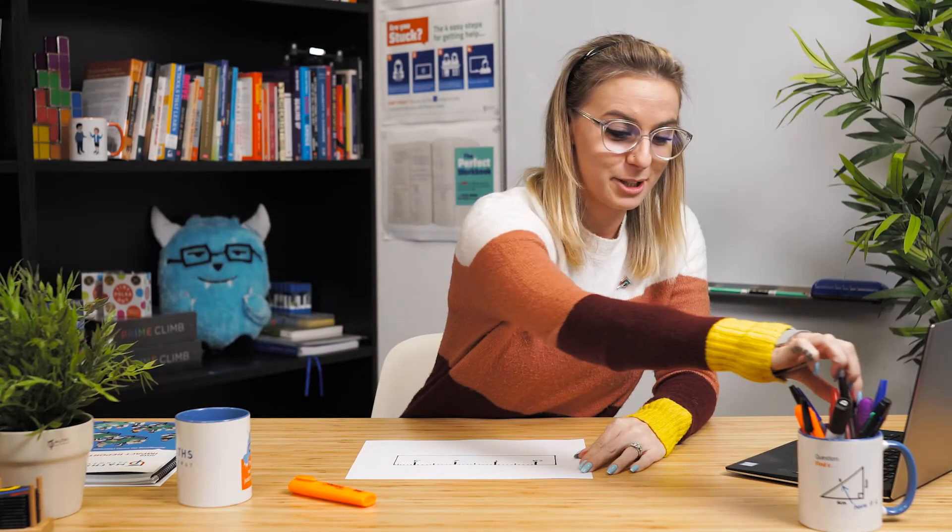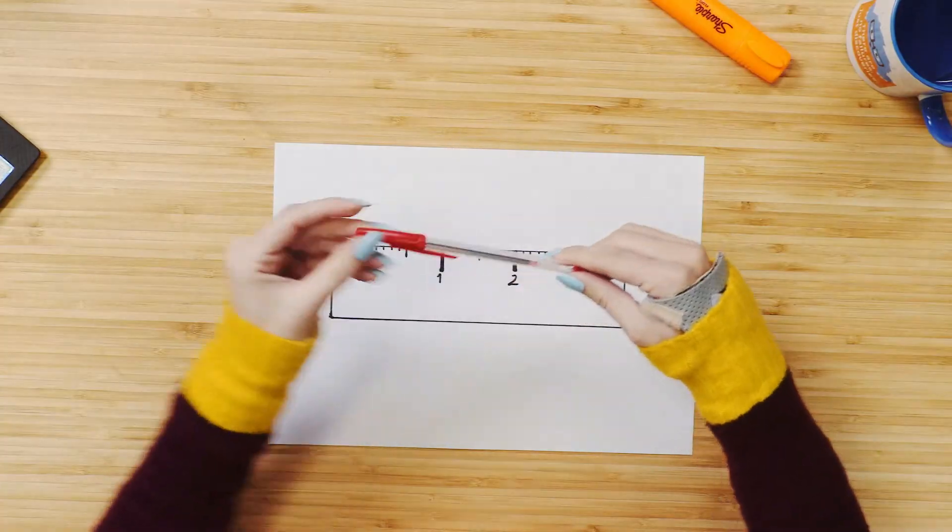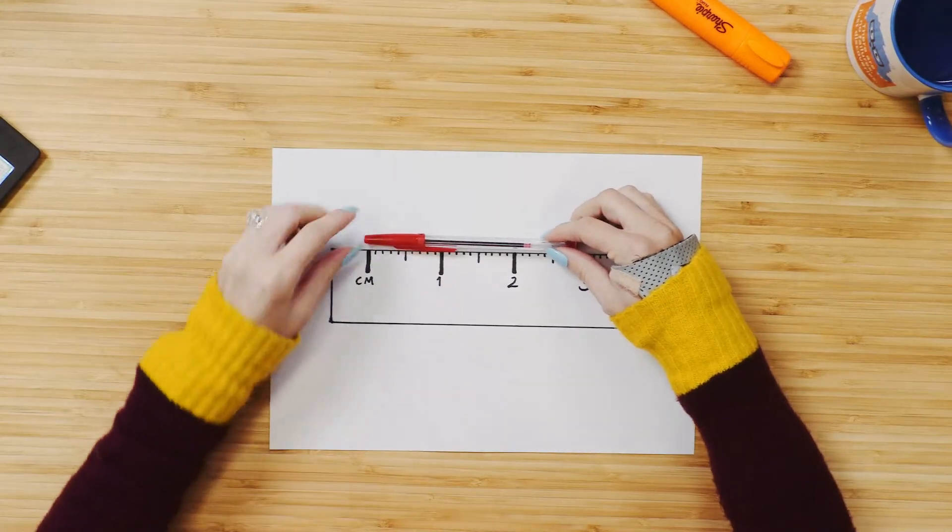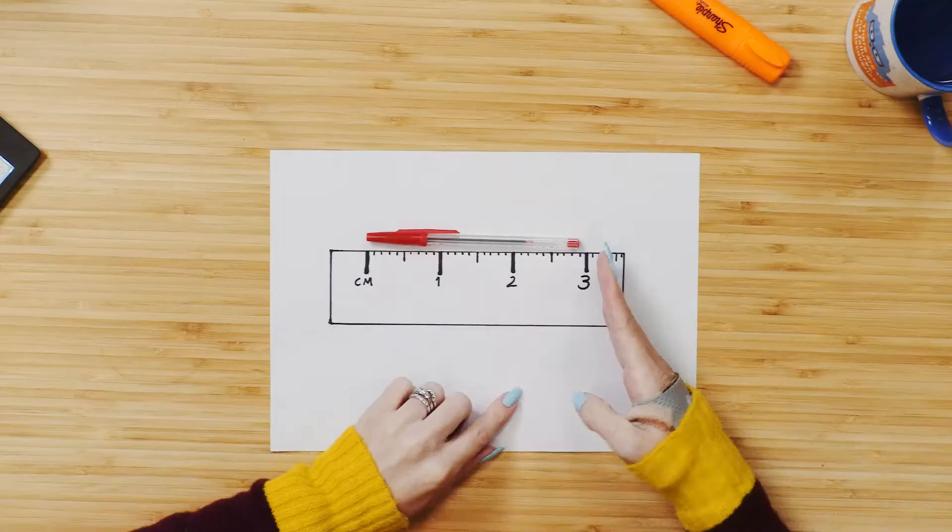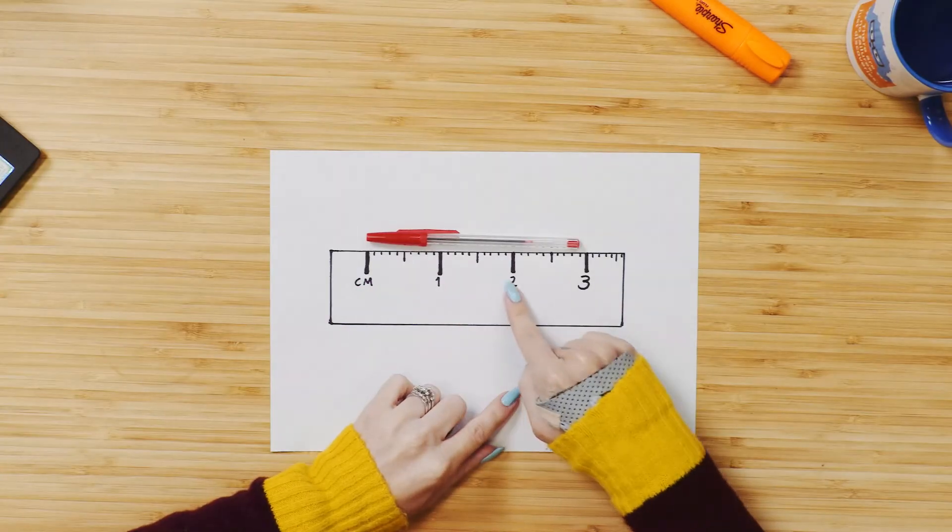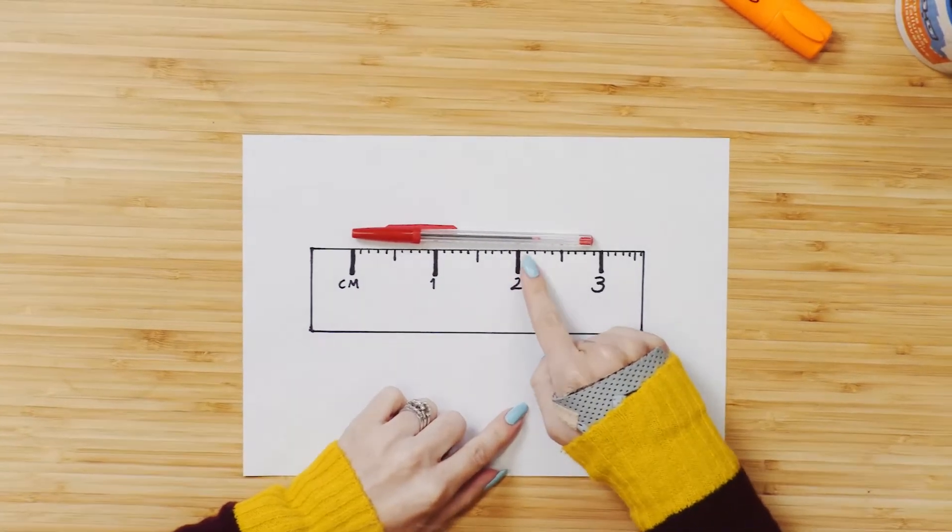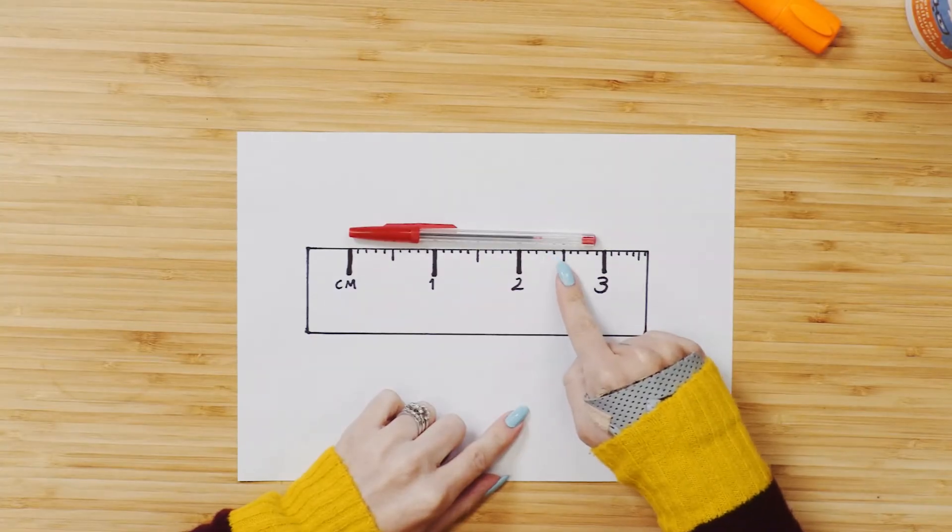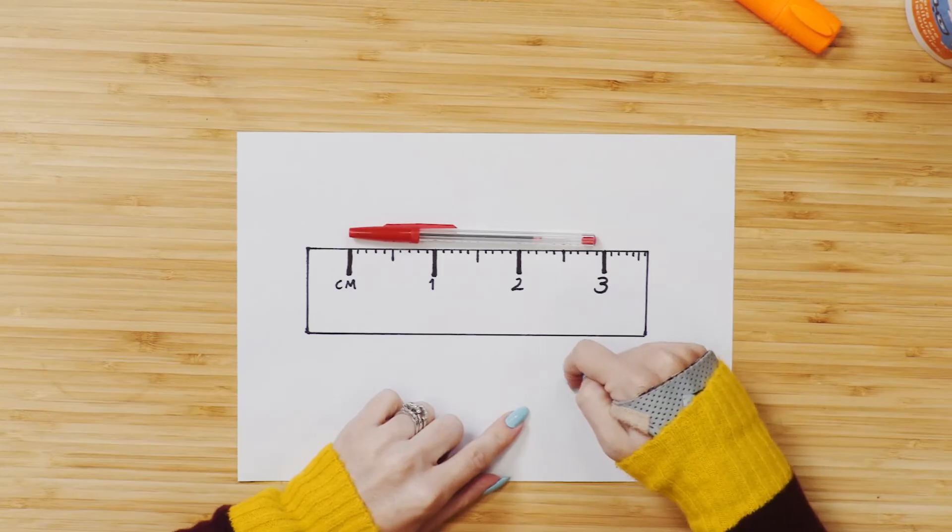For example if I wanted to measure this pen I'm going to start not at the end, I'm going to start from my 0 and I can see that it doesn't quite make it to the 3 but I can see that it's 1 and 2 centimeters and then it is 1, 2, 3, 4, 5, 6, 7, 8 millimeters long.